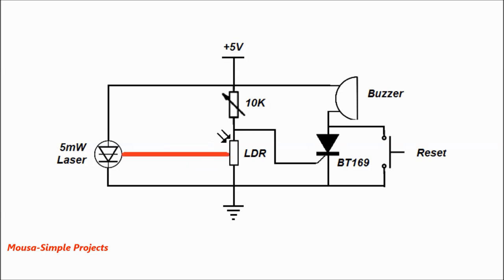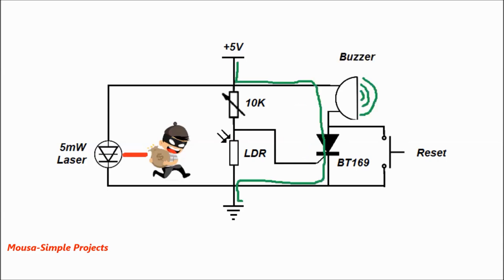So the voltage at the SCR gate will not be enough to trigger it. But as soon as the laser light is cut off by the body of the thief, the resistance of the LDR increases and the voltage at the SCR gate increases enough to trigger it, so the SCR becomes conductive and runs the buzzer.